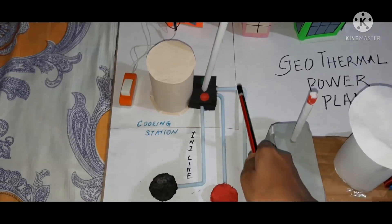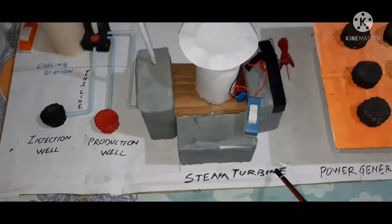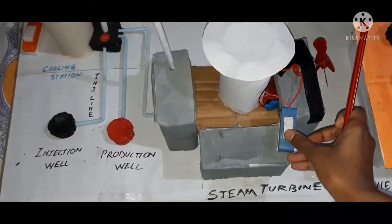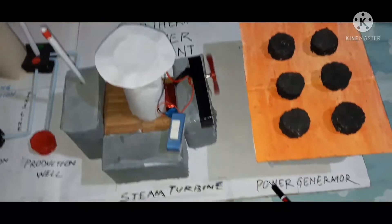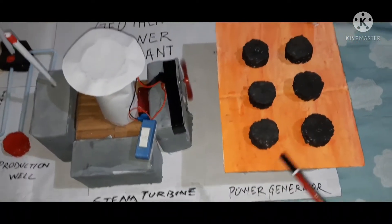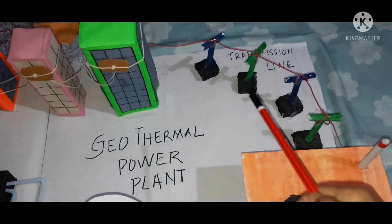This steam is then sent to the steam turbine. Passing through the turbine drives it, which is connected to a power generator that generates electricity and sends it through transmission lines to cities and towns.